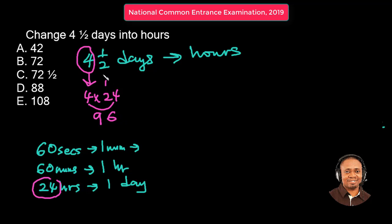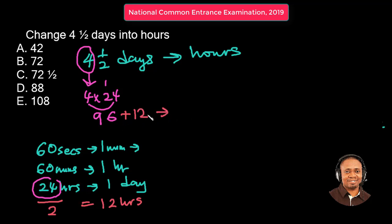Then remember we also have half a day. Half a day is half of 24 hours, and that is 12 hours. So we need to add that up to the 96. 6 plus 2 is 8, and 9 plus 1 is 10, so we have our final answer as 108 hours.